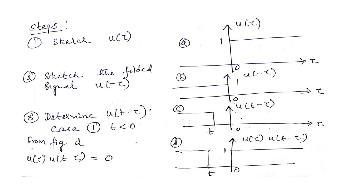To get u(t − τ), we first sketch u(−τ), which is a time reversal or folded signal. Taking u(τ) from the first graph, we flip it over the vertical axis, giving u(−τ) equal to 1 for all values ≤ 0 and 0 for all values > 0. Once we have the folded signal, we proceed to obtain u(t − τ).